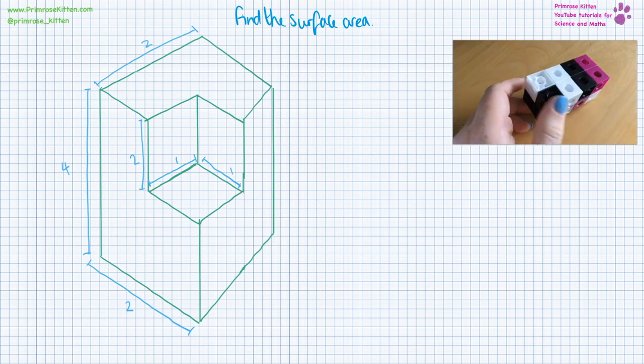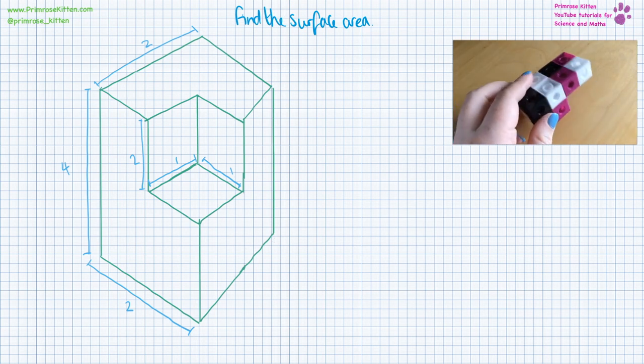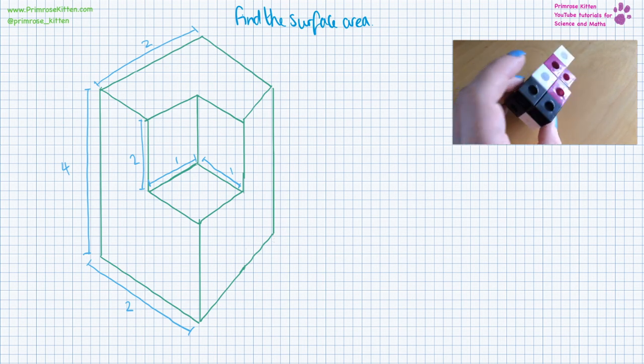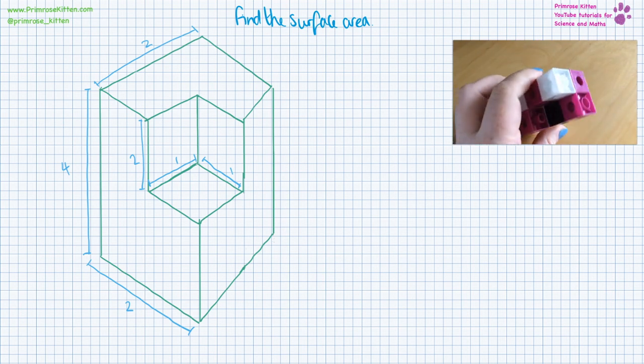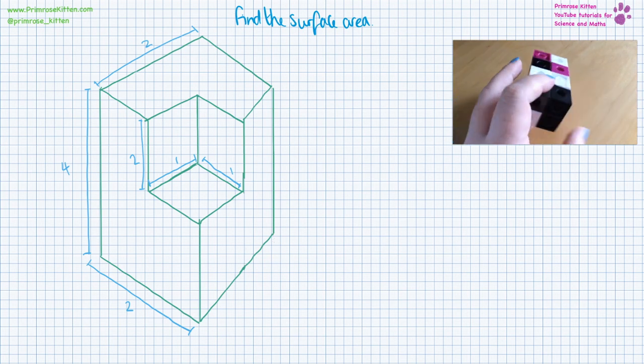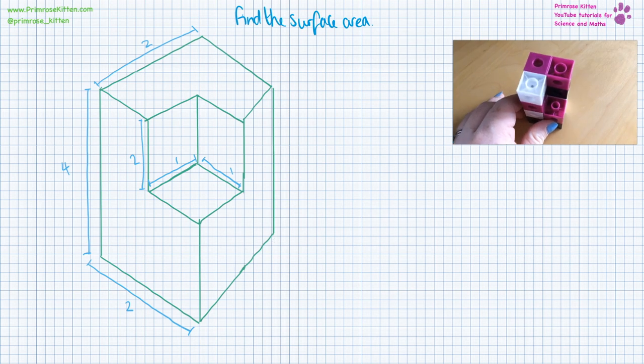We need to find the surface area of this shape. Now sometimes when you've got things in 3D or 2D, it's really hard to work out exactly what to do. What I suggest you do is try and build things out of your pencil case. For this we have several different parts we need to find.